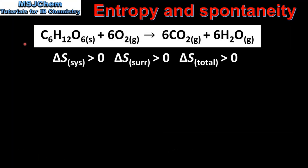Our first example reaction is the combustion of solid glucose to produce gaseous carbon dioxide and gaseous water vapor. The change in entropy of the system is positive as we go from 6 moles of gaseous reactants to 12 moles of gaseous products. The change in entropy of the surroundings is also positive as heat is released, so the total change in entropy is positive and the reaction is spontaneous.